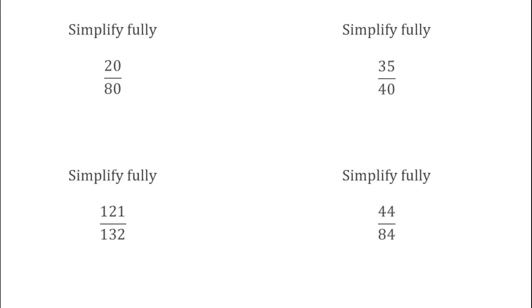For this first question, 20 over 80, we want to simplify fully so we're going to look for the highest common factor. The highest common factor of these would be 20. So dividing the top by 20 gives us 1, and 80 divided by 20 gives us 4. So 20 over 80 simplifies to 1 over 4, or a quarter.